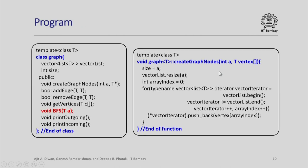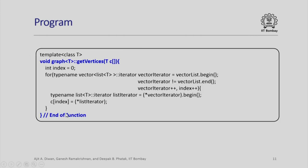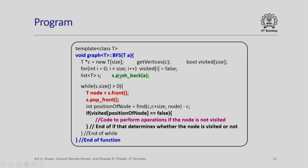The computer program that we write is amazingly similar to the one which we had written to implement the depth first search. For example, we have the class graph instead of the DFS, we have now a function called BFS, all other functions are same. We have create graph nodes which is similar to what we had written earlier. Next, we have get vertices which will also work in exactly the same fashion as we had done earlier. Now, we come to the template for BFS function. Please note that in the BFS function, we do exactly the same thing that we did earlier, we define the bool array visited, we have the gate vertices function and so on.